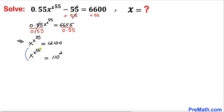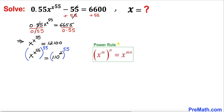Here's our next step: let's go ahead and take a power of 1/55 on both sides — power 1/55 on the left hand side and power 1/55 on the right hand side as well. Now let's recall the power rule of exponents. Our left hand side is going to become x to the power 55 times x to the power 55.